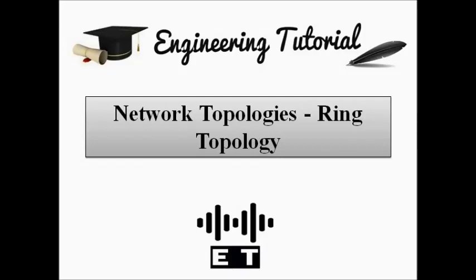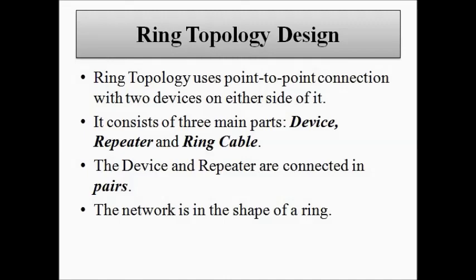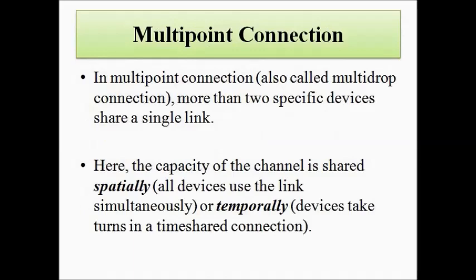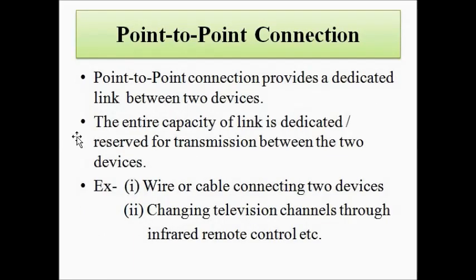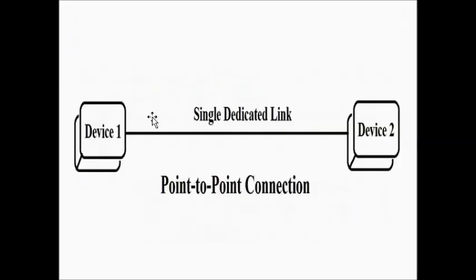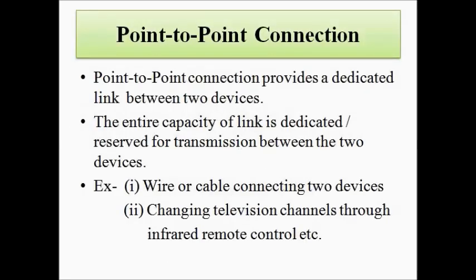The ring topology is a network connection which uses the point-to-point connection method. In point-to-point communication, a dedicated link is connected between two devices, and the entire capacity of this channel is allotted for communication between those two devices. Only the two connected devices can share data through this link. No other device can interfere, and the entire link capacity is dedicated for those two devices only. This is what point-to-point connection means.